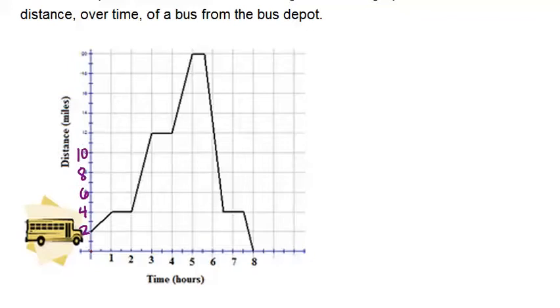So at time zero, it's two miles from the bus depot, and then it gets farther away. It stops for an hour at four miles away. Then it drives again, gets farther away, stops, gets farther away, stops, and then turns around and starts getting closer and closer again. But then it stops for a little bit and then gets closer again. So we're going to use this graph to answer some questions.